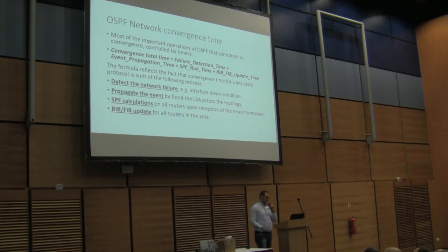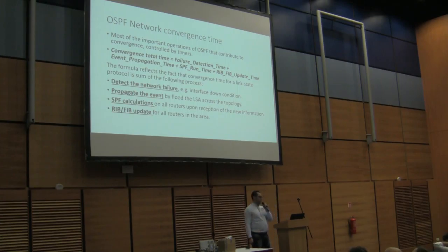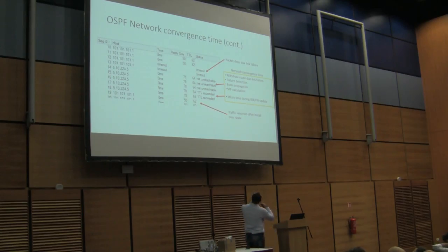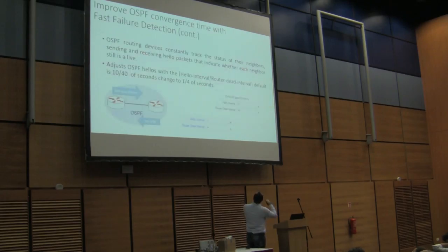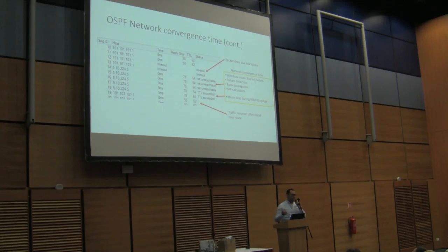The most important topic is OSPF network convergence time. Several actions occur: first, failure detection time, then event propagation, then SPF calculation, then RIB and FIB updates. These all contribute to our convergence time. As we can see in the diagram, link failure is detected, then event propagation and SPF calculation begin, followed by updating the routing table — which can cause micro-loops — and then traffic resumes. The key question is how to minimize these steps.